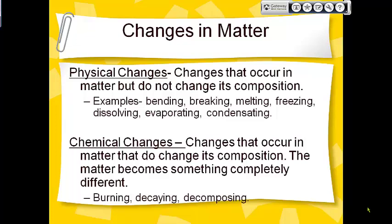Chemical changes in matter are when you change what something is made out of — you change it from one substance into a different type of substance. For instance, burning: if you take a piece of paper and burn it, you no longer have paper; you have ashes, smoke, and soot. And when you take an apple and leave it in the refrigerator too long and it decays, you no longer have an apple — you have this gooey, decaying mush.